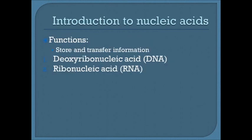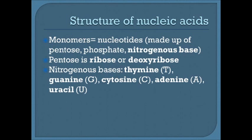Nucleic acids store and transfer information. We have two primary nucleic acids: DNA (deoxyribonucleic acid) and RNA (ribonucleic acid). DNA has instructions for making proteins, and RNA makes them. The monomers of nucleic acids are nucleotides, made up of a pentose sugar, phosphate group, and nitrogenous bases. The pentose sugar is ribose in RNA and deoxyribose in DNA.